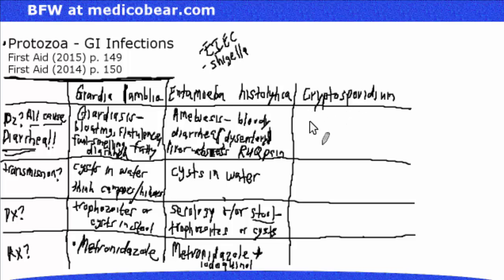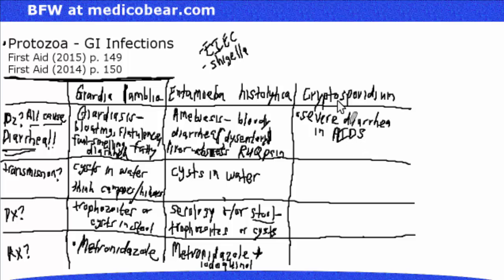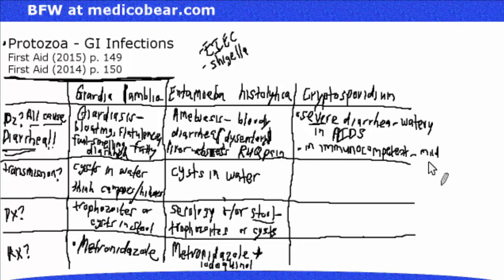Cryptosporidium, or Crypto: a glaringly high-yield point is severe diarrhea in AIDS patients — you have to make that connection. In an HIV-positive patient presenting with diarrhea, especially watery diarrhea, Cryptosporidium is the most common organism isolated. It is very severe in the immunocompromised patient with HIV/AIDS. In the immunocompetent, however, it is a mild disease called cryptosporidiosis — simply mild, watery diarrhea.